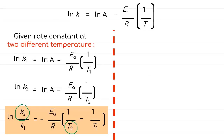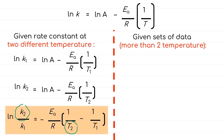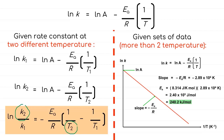The second question type is when you are given a set of data with more than two temperatures and rate constants. In this case, you use the graphical method by plotting ln k against 1/T. First, convert the given k and T values into ln k and 1/T, making sure temperature is in Kelvin. From the slope of the graph, which equals −Ea/R, you can calculate the activation energy. Thank you!